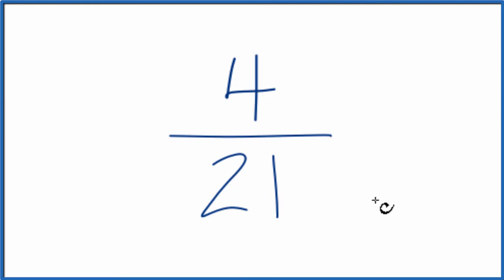To do that, we need to find a common factor that goes into 4 and into 21 evenly. So let's just list the factors for 4 and then 21.